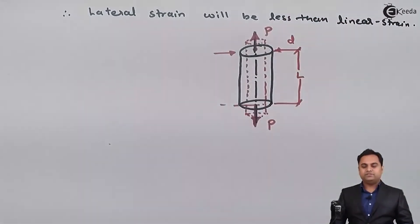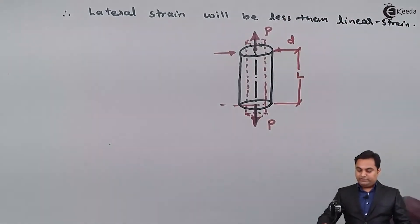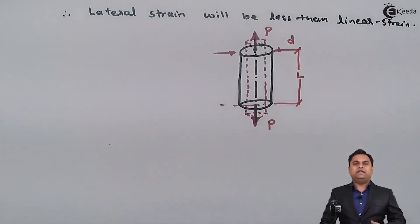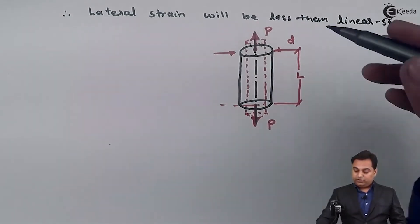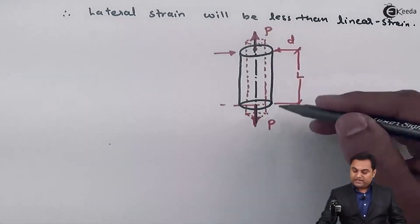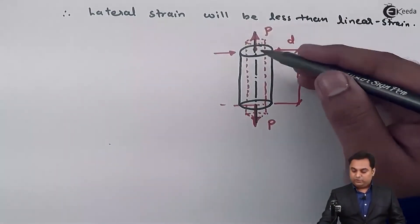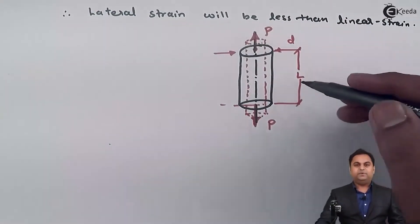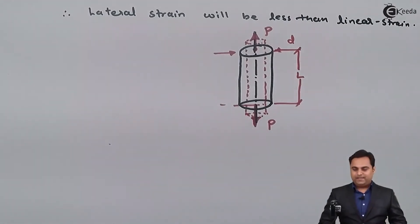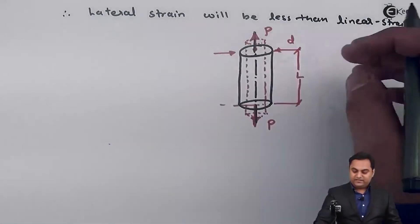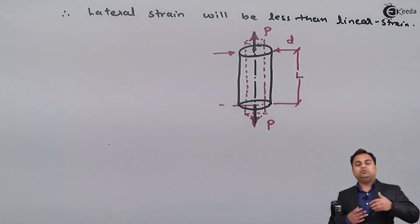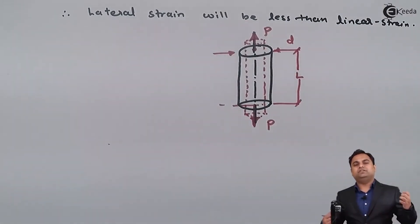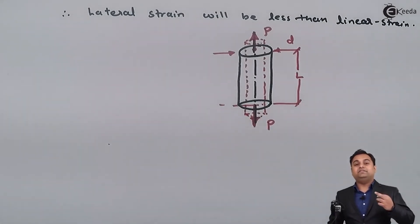Length will increase and diameter will decrease. This increase in length is called linear strain — it is called linear strain because the load is parallel to the length. Lateral strain is perpendicular to linear strain; so along the length it increases but diameter decreases.